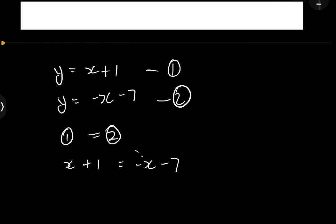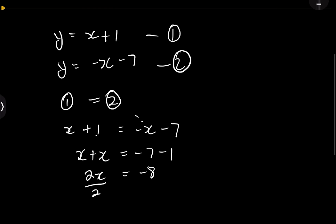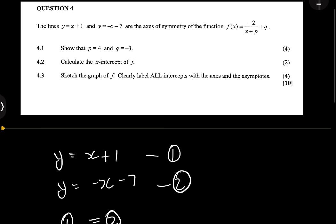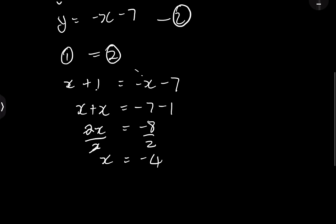So I'm going to say x + 1 = -x - 7, and let's simplify. If I take the -x to the other side it becomes positive, so I'll have x + x on one side, and on the other side I'll take the 1 across to get -7 - 1. So I'll have 2x = -8. Dividing both sides by two, x = -4.